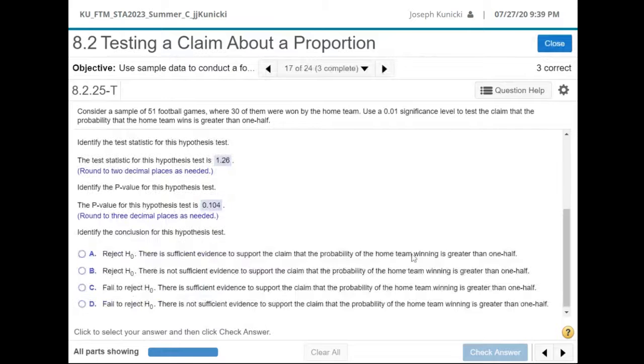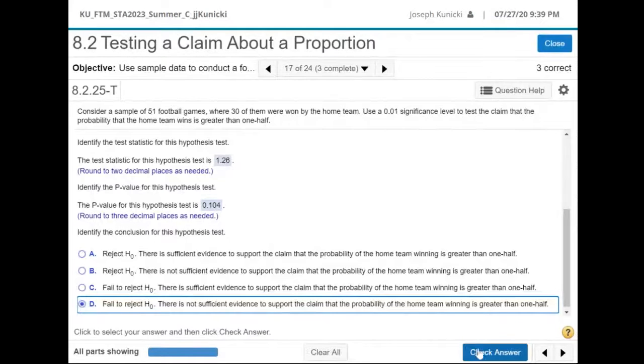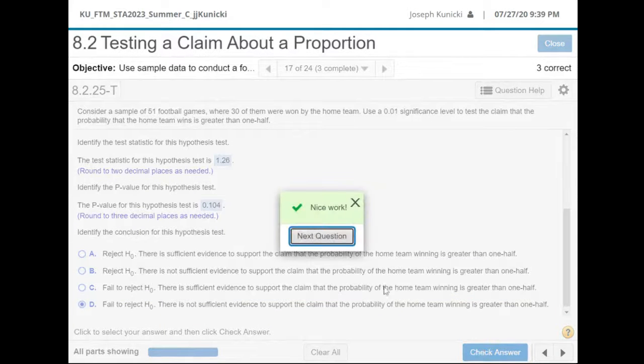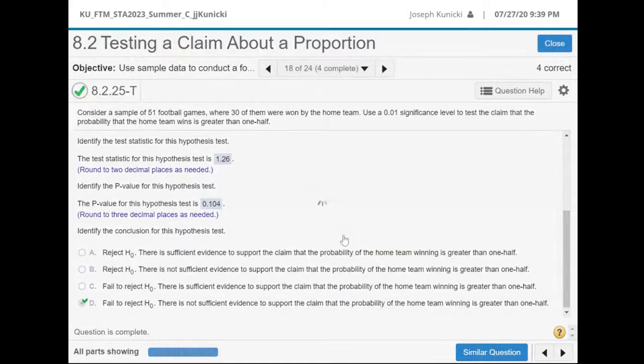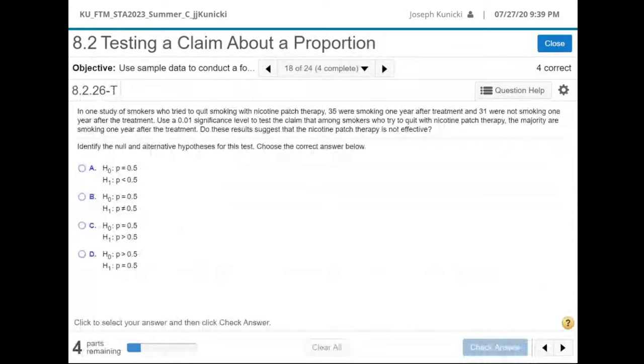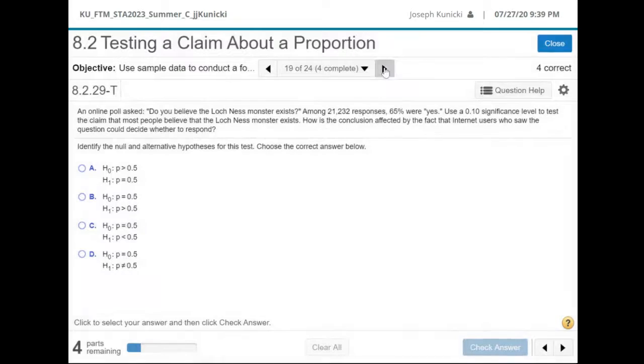And since the p is not low, we're going to fail to reject. And we can't support the claim because the claim's in the alternative. So it's D, we're failing to reject, we can't support the claim. Okay that's it, let's continue with 31.